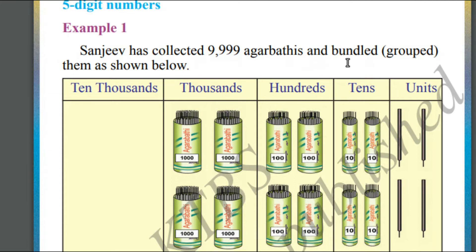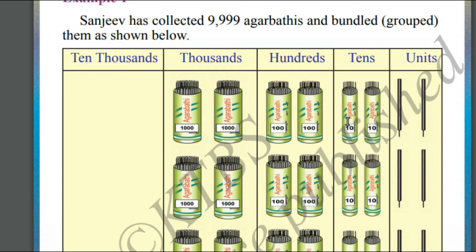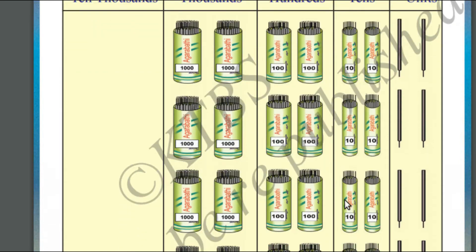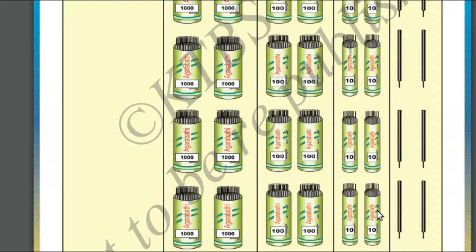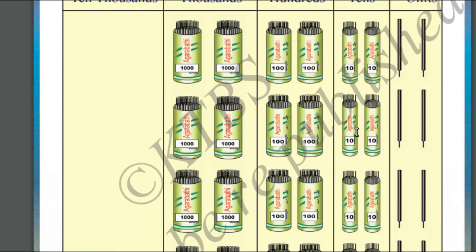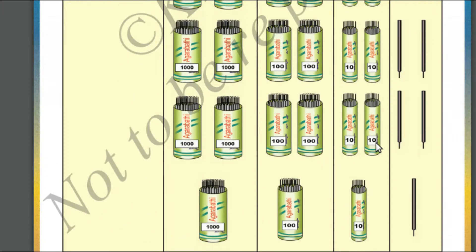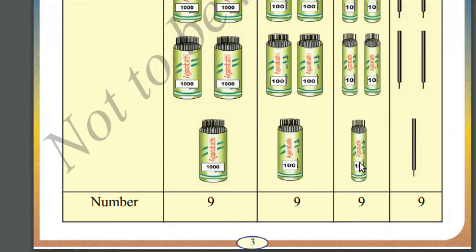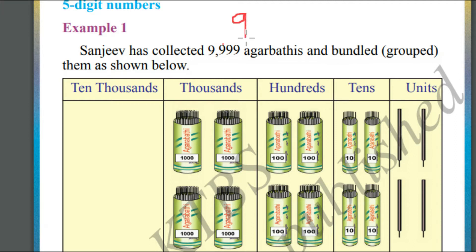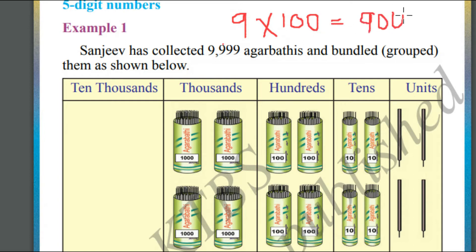Now let us look at the tens place. In one bundle we have got ten agarbathis. So counting in tens: 10, 20, 30, 40, 50, 60, 70, 80, 90. In the tens place we have 9 in the hundreds place, so 9 times 100 is equal to 900 agarbathis.